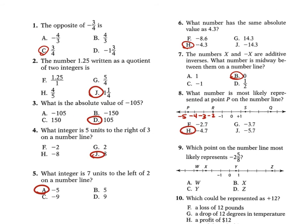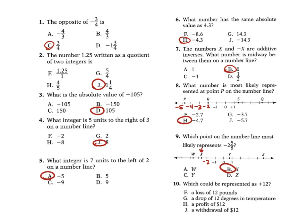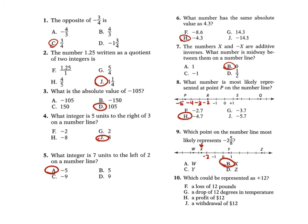For 9, it says which point on the number line most likely represents negative 2 and 5/8. Negative 2 is here; negative 2 and 5/8 would be point X. Lastly, problem 10 asks which could be represented as positive 12. F says the loss of 12 pounds — that's negative 12. A drop of 12 degrees in temperature would be negative 12. A profit of $12 is adding $12, so H would be our answer. A withdrawal of $12 would be subtracting $12.